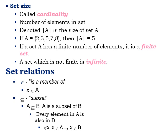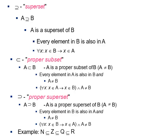Set relations include: 'is a member of' or 'is an element of,' denoted by the element symbol. A is a subset of B means every element in A is also in B. A is a superset of B means every element in B is also in A. A proper subset means every element in A is also in B, but A is not equal to B. Similarly, there is a proper superset relation.